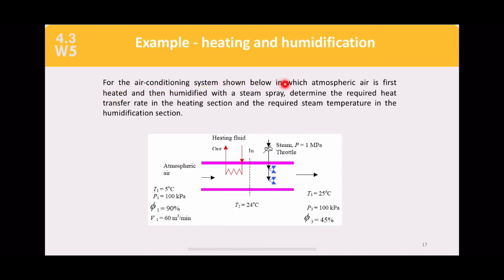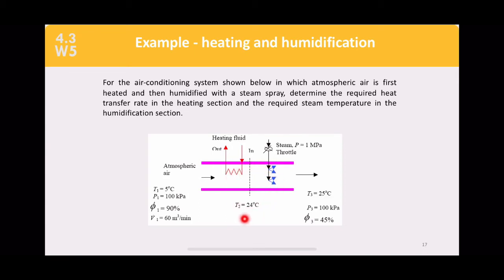Example for heating and humidification: Air is first heated then humidified with a steam spray. State 1: 5°C, 100 kPa, 90% relative humidity, volumetric flow rate = 60 m³/min. State 3 (final): 25°C, 100 kPa, 45% relative humidity. After the heating coil (State 2): T2 = 24°C — so temperature increases from 5°C to 24°C through the heating section.